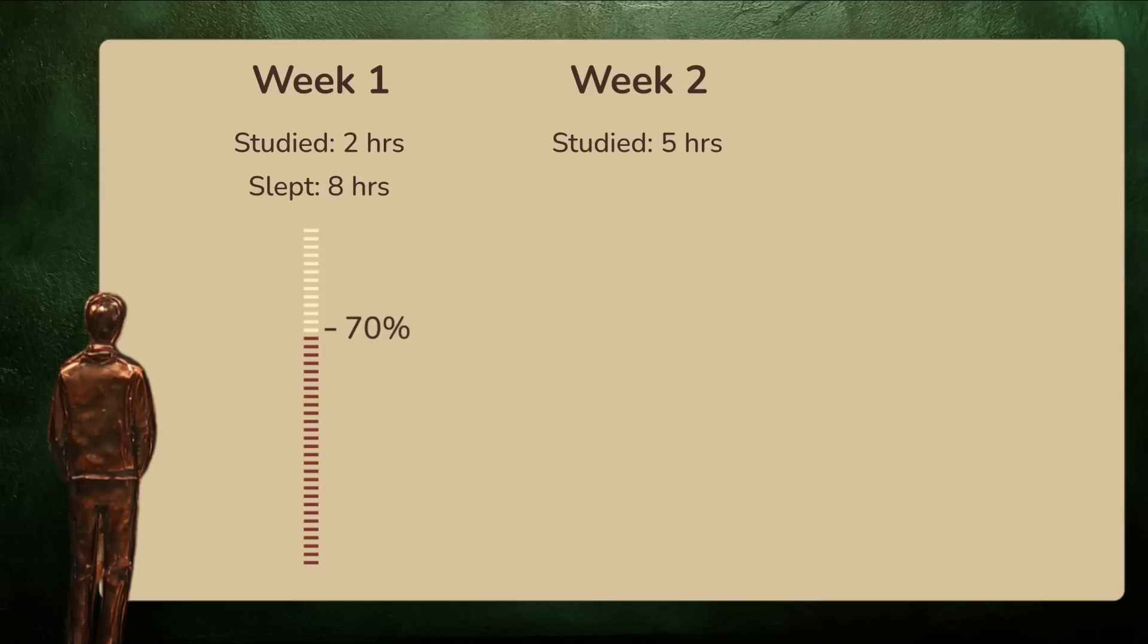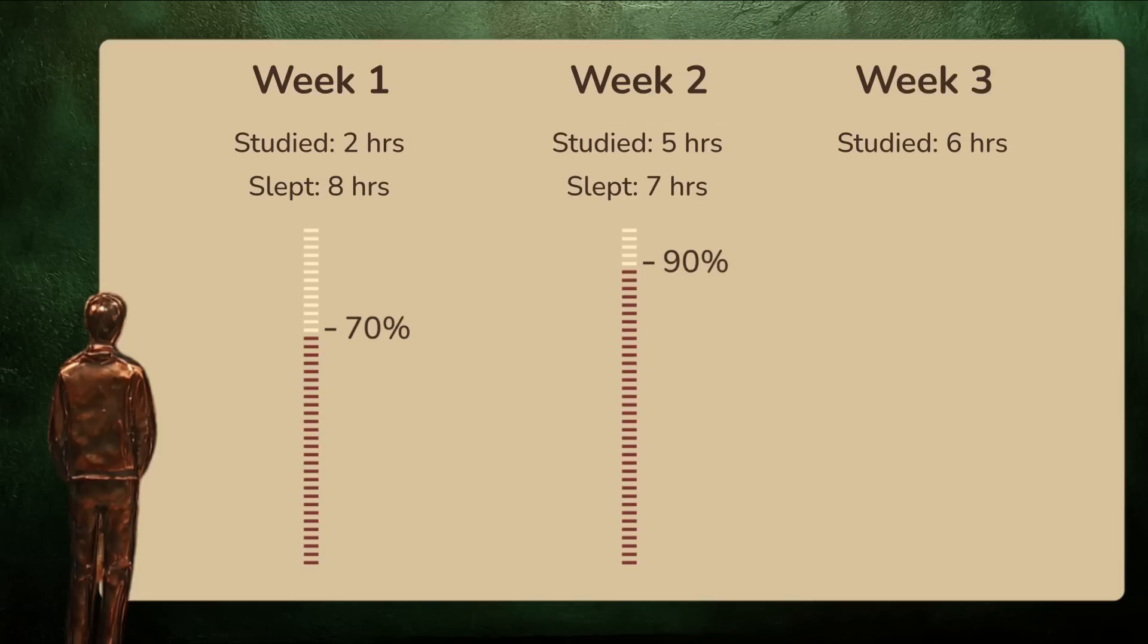In the second week, he ramped up to five hours of studying and scored a 90, but his sleep dropped to around seven hours a night. By week three, Logan was putting in six hours of study time and scored a 95, but now he was down to six and a half hours of sleep.